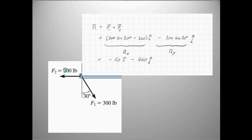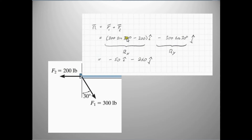We have two forces acting on this pipe, F1 and F2. Since they're both acting at the same point, the easiest way is to calculate a resultant force: F1 plus F2. F1 has a positive x component of 300 times the sine of 30 degrees. The resultant x component is 300 sine 30° minus 200, giving a total x component of minus 50i. F1 is the only one with a y component, which is in the negative y direction: minus 300 times the cosine of 30 degrees J. That gives the total resultant vector.